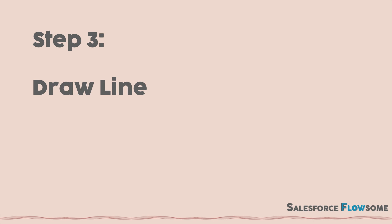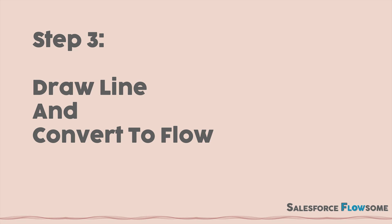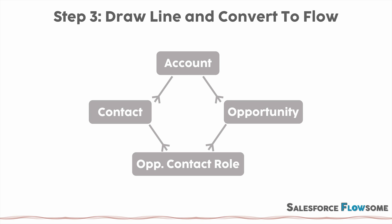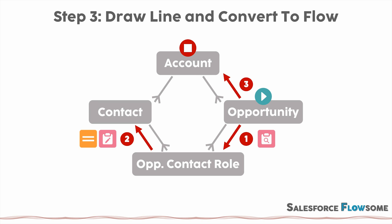Step 3: draw the line and convert it into flow. To summarize, flow creates linear solutions that run through your data model to get to the goal. So after the previous two steps, now you just need to draw that line, identify the actions, and convert them into flow steps. Then you will have your first draft solution.